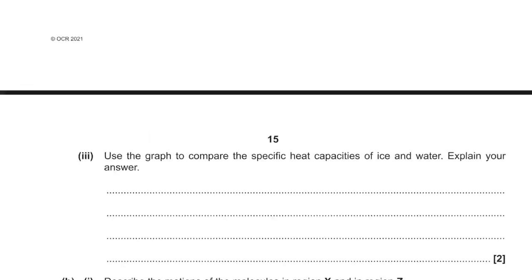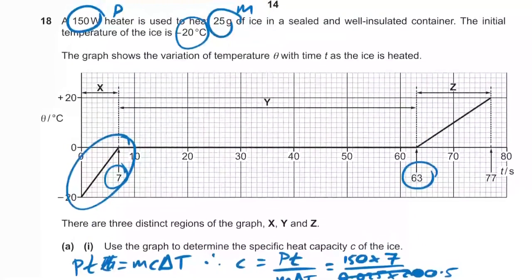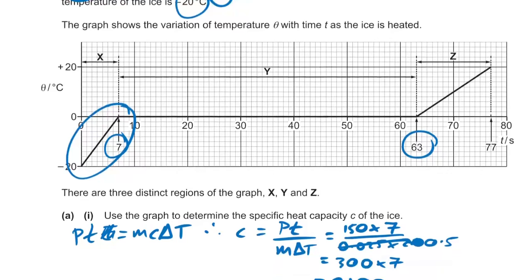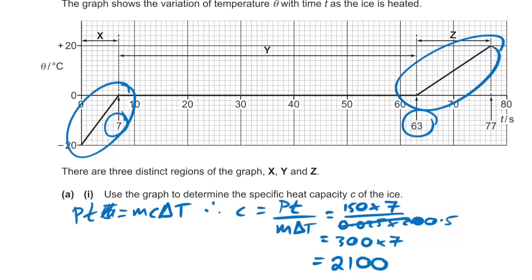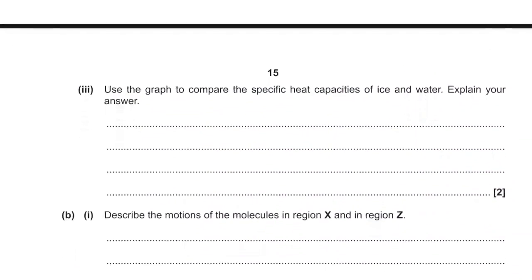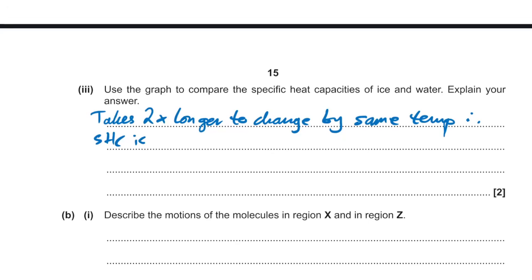Use the graph to compare the specific heat capacities of ice and water. For the liquid water section, the same temperature change takes 14 seconds instead of 7 — twice as long. So the SHC of water is 2 × 2100 = 4200 J/(kg·K), which matches the known value.